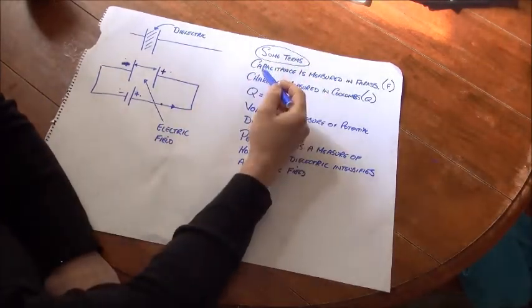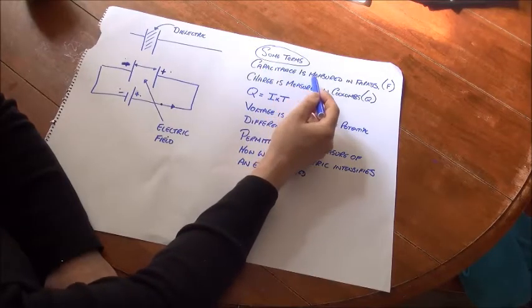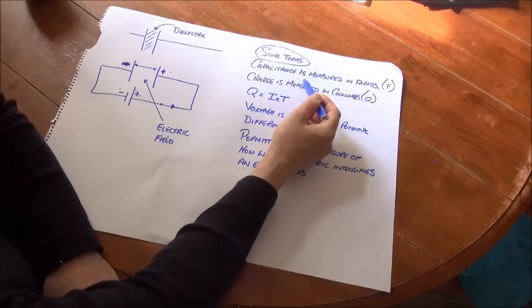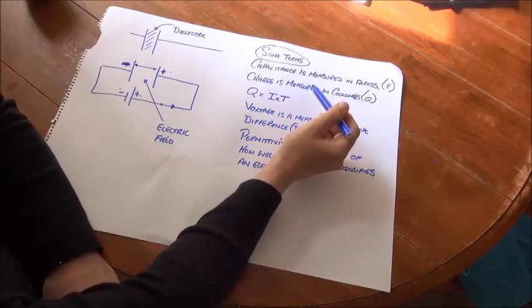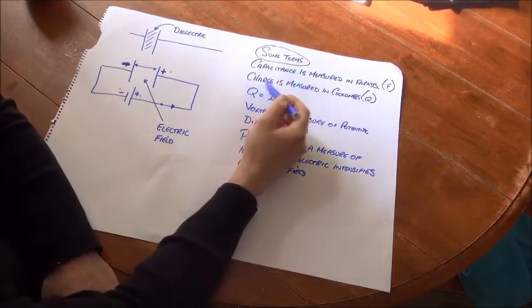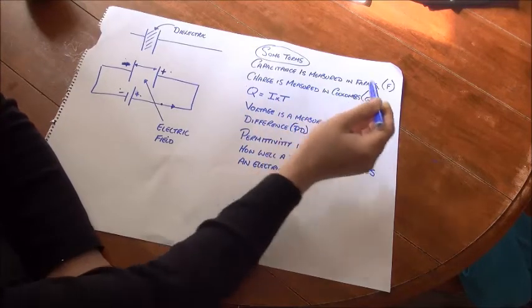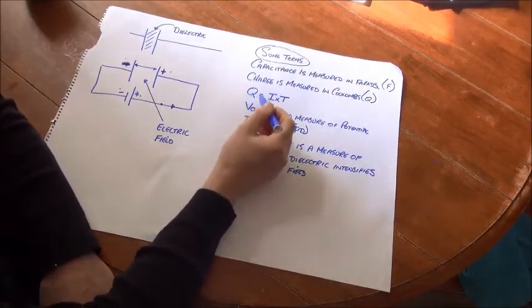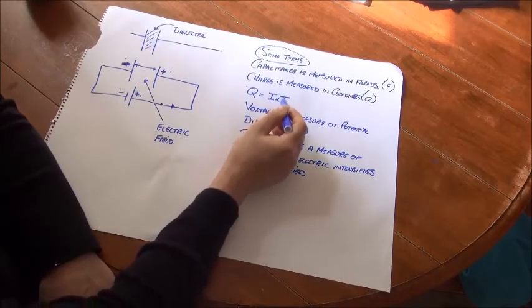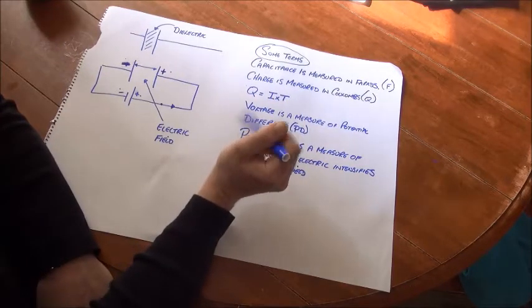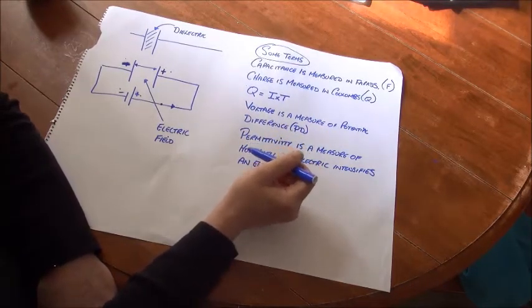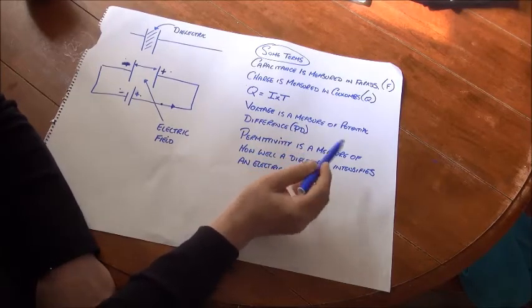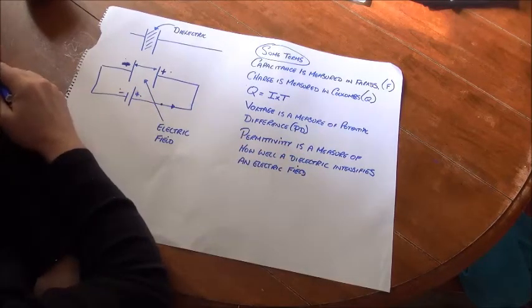Some of the terms we're going to be dealing with today: Capacitance is measured in farads. The farad is an extremely large measure and it's far more likely that you're going to measure capacitance in microfarads, that's millionths of a farad, or nanofarads, billionths of a farad. We've already mentioned charge, but charge is measured in coulombs and it's given the letter Q, and Q is equal to the amount of current flowing in the circuit times the time, measured in seconds. Voltage is a measure of potential difference, PD. And permittivity is a word you will come across when you're dealing with capacitors. It's a measure of how well a dielectric intensifies an electric field.